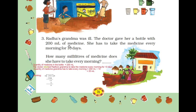Doctor advised her to take medicine every morning for 10 days. So, quantity of medicine grandma has to take every morning equals 200 divided by 10, and the answer will be equal to 20 ml. You can see the working here. So, quantity of medicine grandma has to take every morning equals 20 ml.